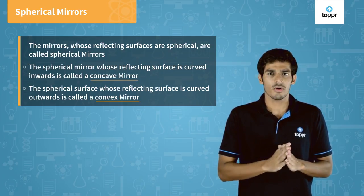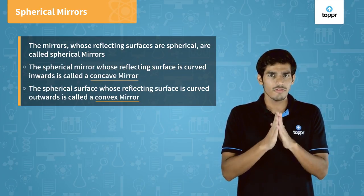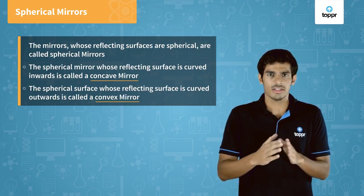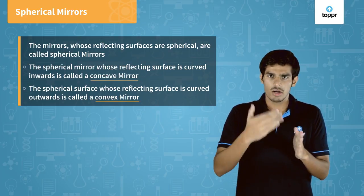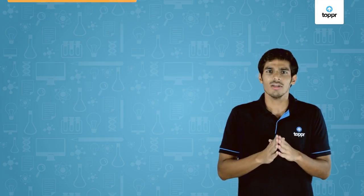In the activity we performed, we can see that the surface of the spoon bulged inwards can be approximated to a concave mirror and the surface bulged outwards can be approximated as a convex mirror.